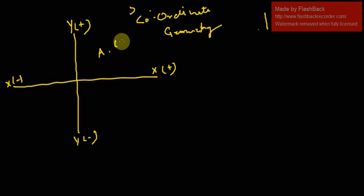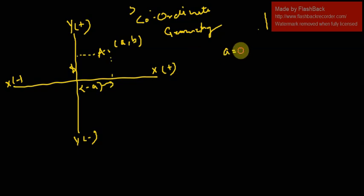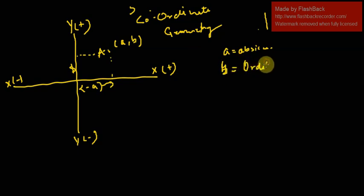We write coordinates in the form (a, b), where a is the value on the x-axis — you draw a perpendicular and this gives value a on the x-axis — and b is the value on the y-axis. Here, a is called the abscissa and b, which is on the y-axis, is called the ordinate. So to locate any point we need to know the abscissa and ordinate.